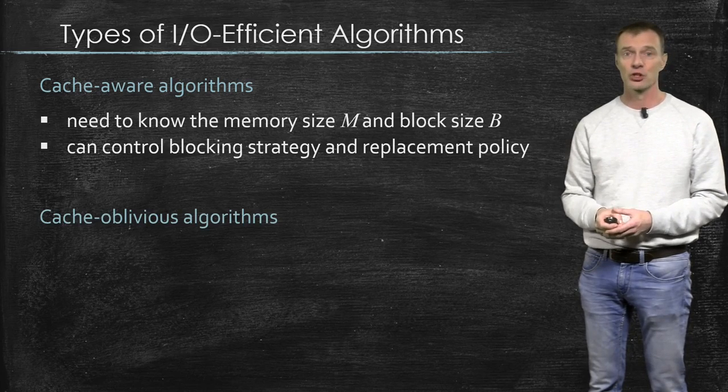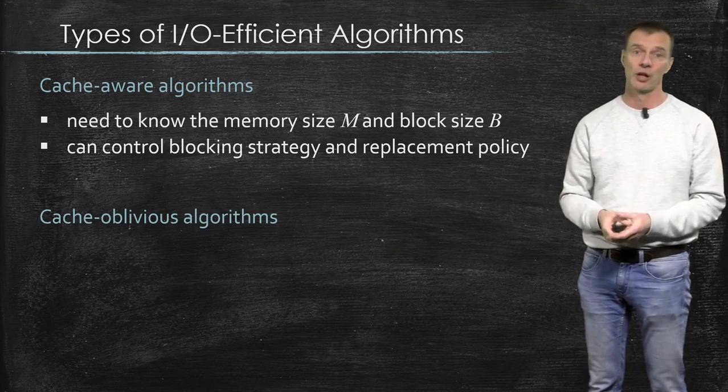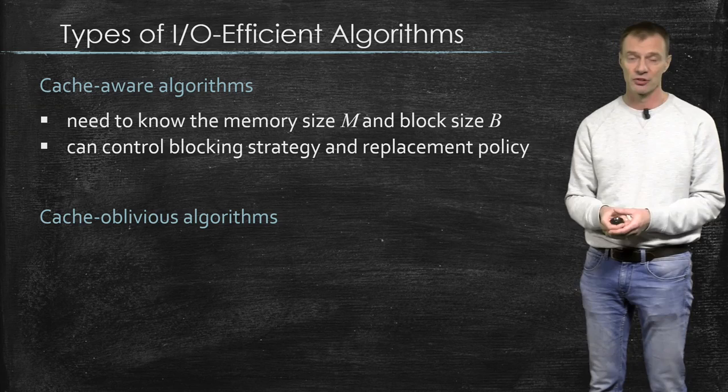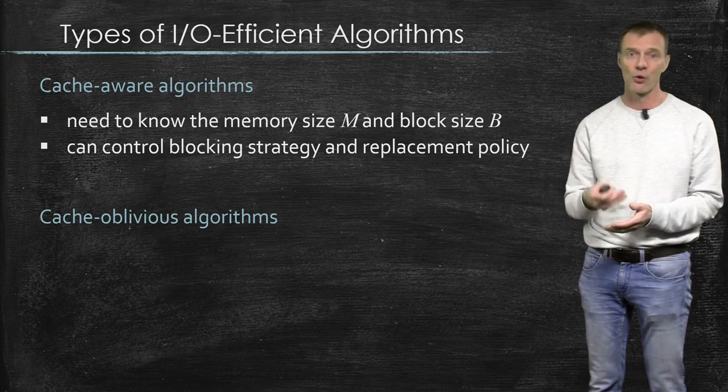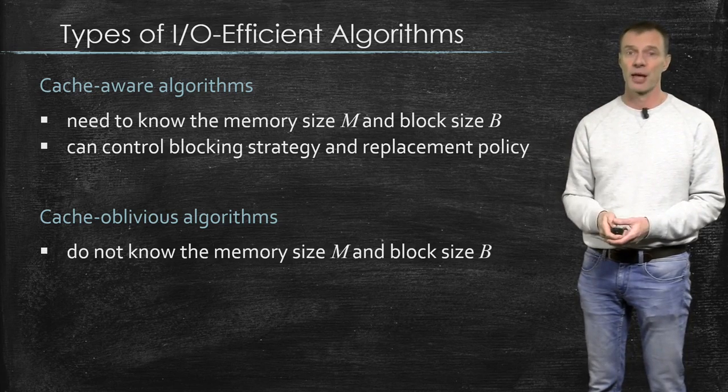On the other hand, cache-oblivious algorithms, they are oblivious of how big the internal memory is, and they are oblivious of how big a block is, so they do not know this M and this B.